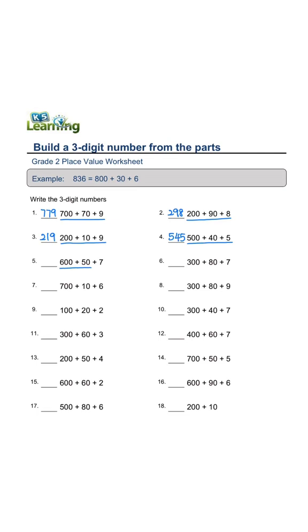600 plus 50 plus 7 equals 657. 300 plus 80 plus 7 equals 387. 700 plus 10 plus 6 equals 716.